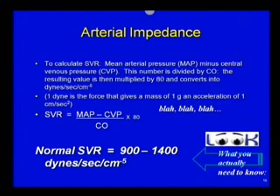You need to know that normal SVR is between 900 and 1400. When they're writing test questions, they will give you those numbers and you have to figure out: is this patient clamped down? Is their arterial bed totally clamped down? If it's clamped down, we will have a high SVR. If they're totally dilated in their periphery — which is what we see in septic shock, for example — we're going to have a low systemic vascular resistance, probably a number less than 900.